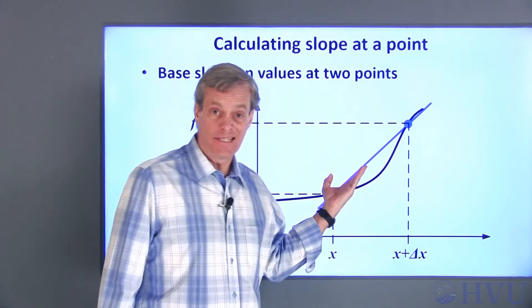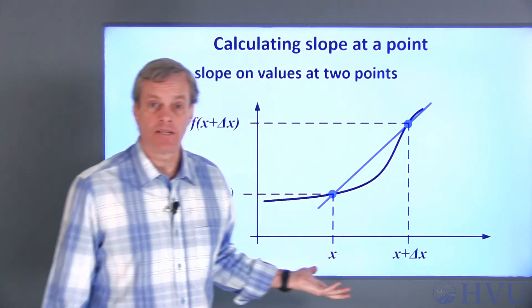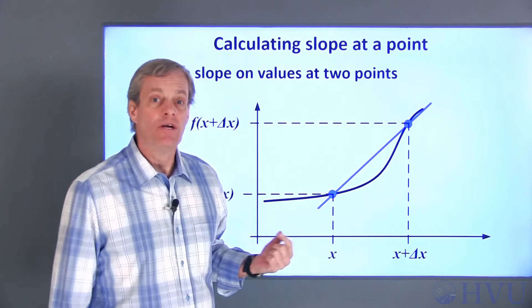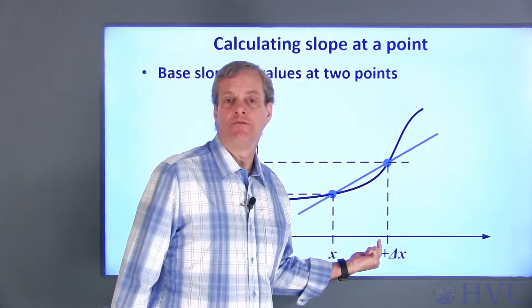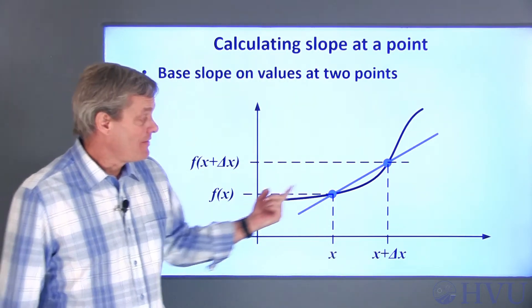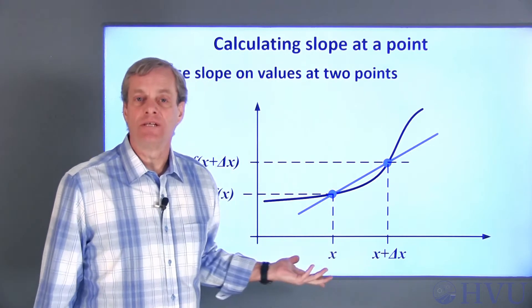The slope of this line is obviously a bad approximation to the tangent of the curve. So let's pick a smaller value for delta x. This is better, but let's reduce delta x again.